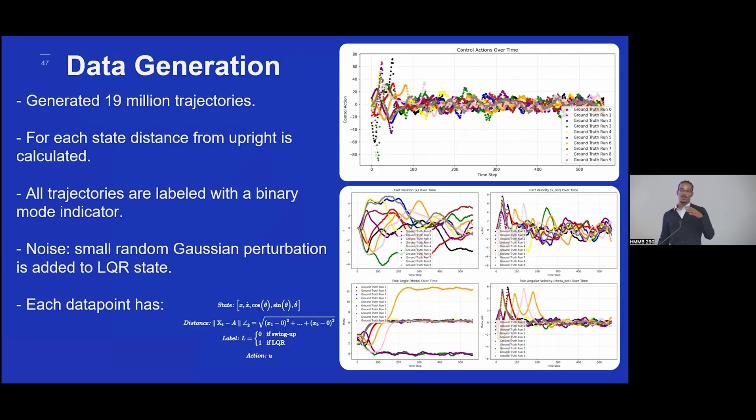So this is a transformer model, so we need a lot of data. It's deep learning. So we generated 19 million trajectories. For each state, we calculated the distance from upright so that the model has some sort of value that it knows to drive to zero as it's providing control actions. All trajectories are labeled with a binary mode indicator.